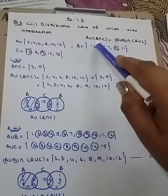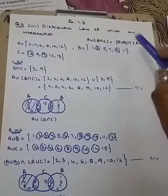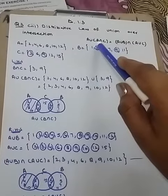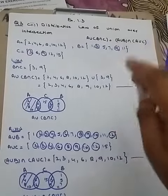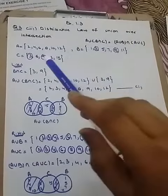So I'm going to take left hand side. This is our set, three different sets. In left hand side we will solve the intersection C first, and the intersection of B and C is three and nine.